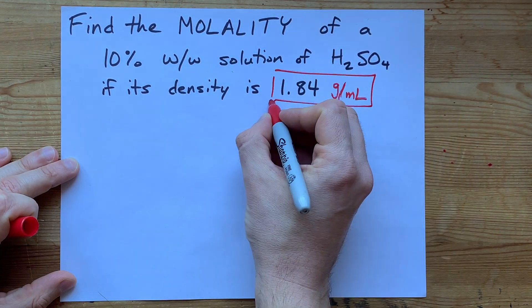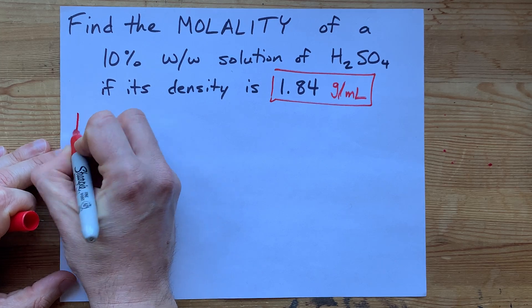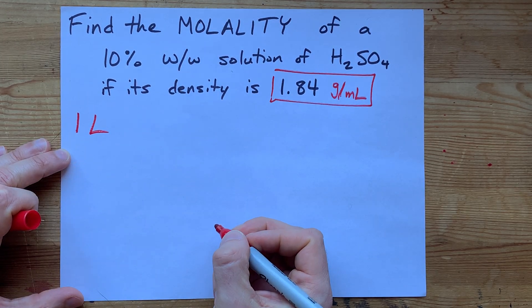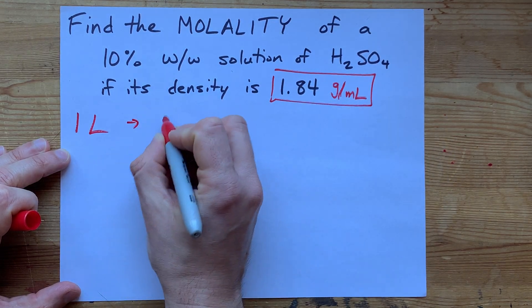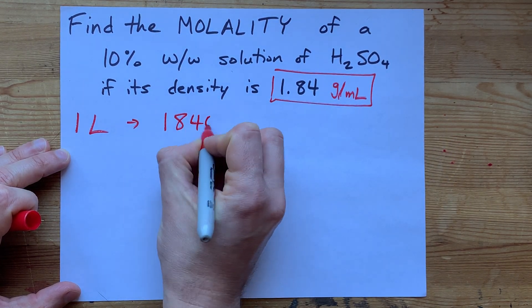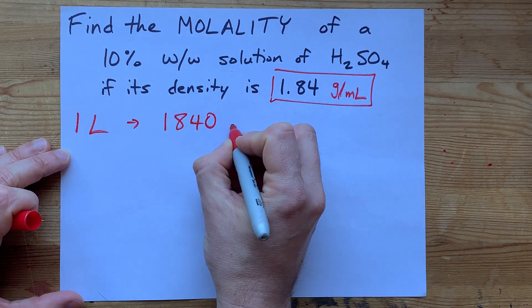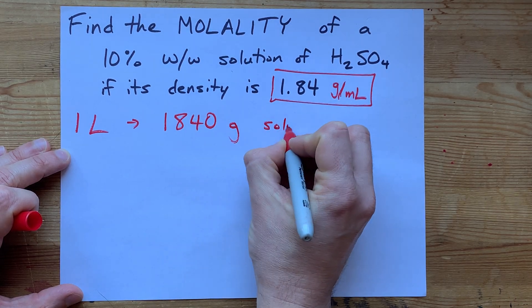Here's what's important here. We have this density, right? Let's say that we have one liter of the solution. That one liter is going to be a thousand of these. One liter will be 1,840 or 1,840 grams of the solution.